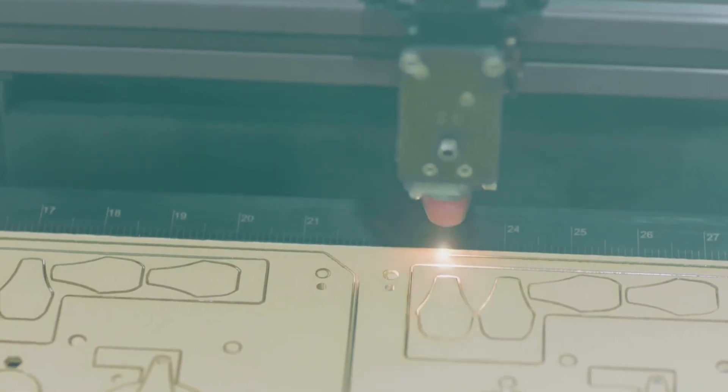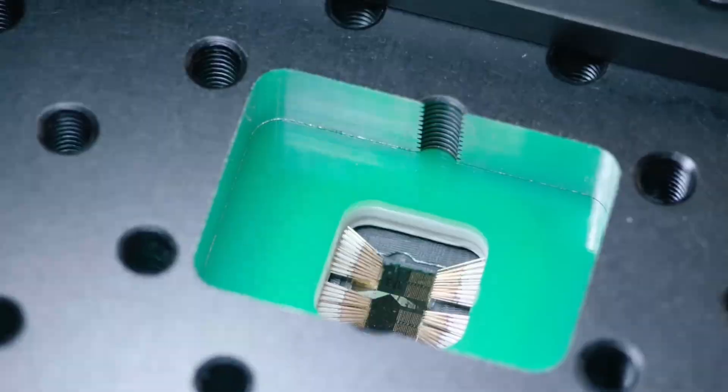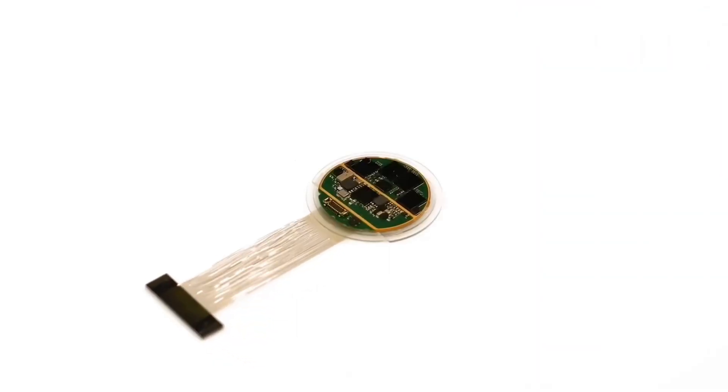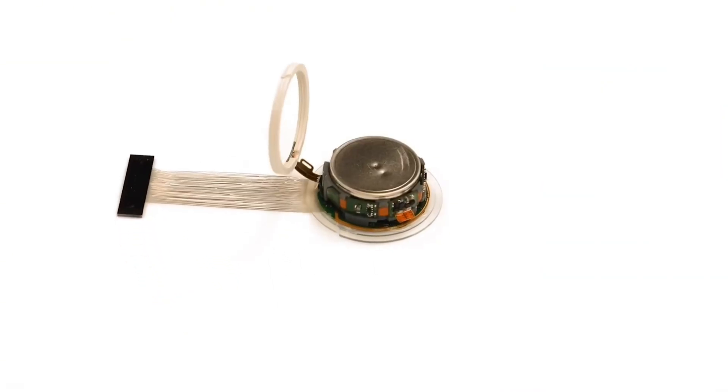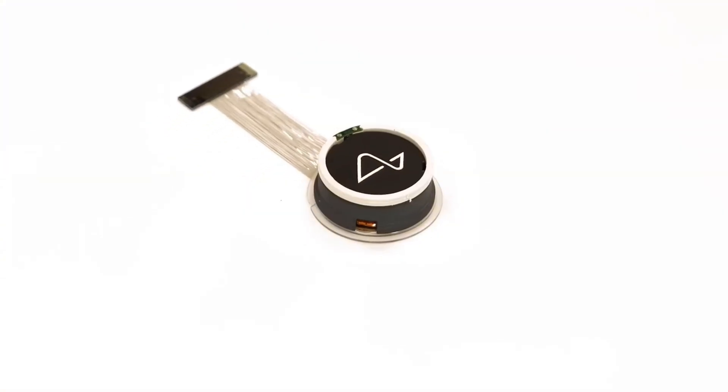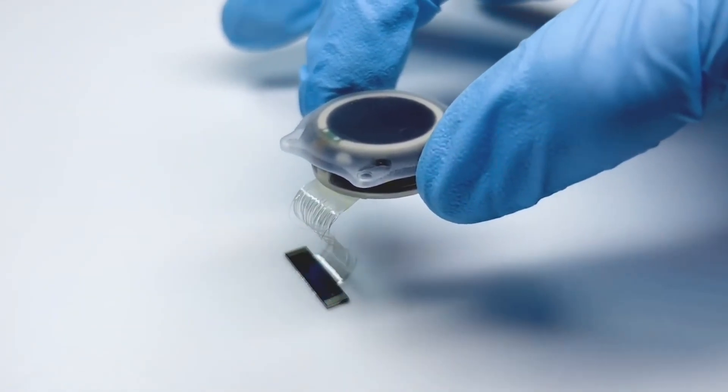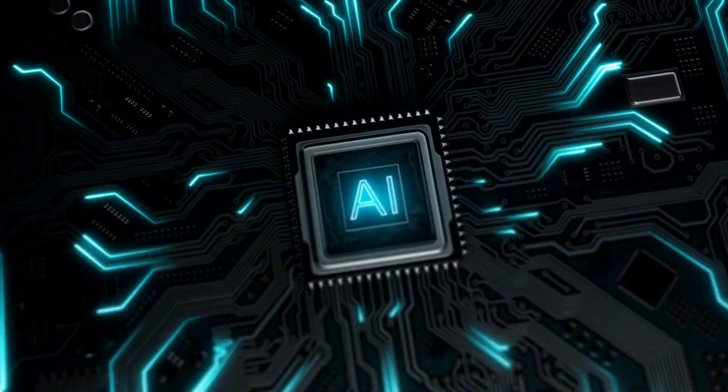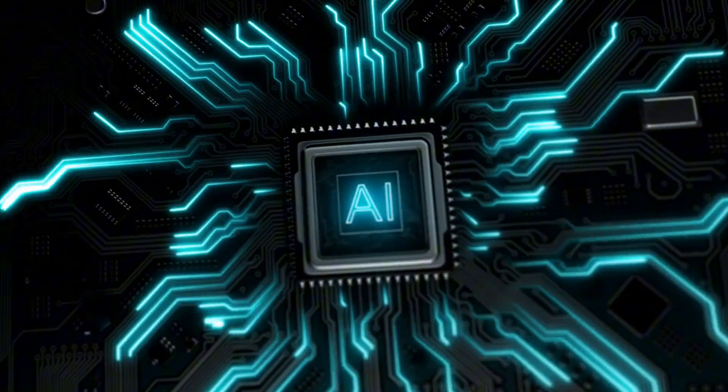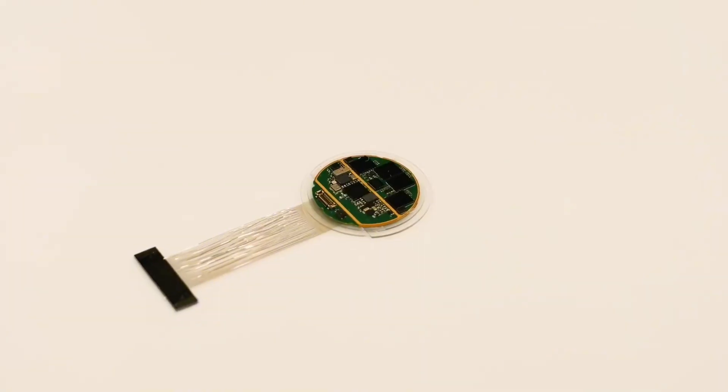Lastly, we can't overlook the compact implant itself, the N1. This fully implantable device is small, yet powerful. It records neural activity through 1,024 electrodes distributed across 64 threads, effectively turning brain signals into understandable data. And the best part? It's charged wirelessly, making it a seamless part of the user's life.